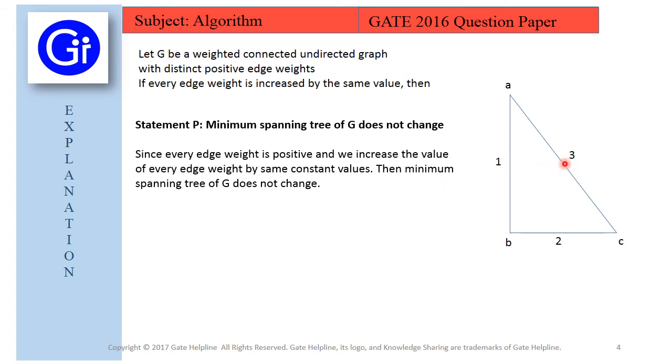Because if we multiply all these edges with the same constant, let's suppose 2, then this will become 2, this will become 4, this will become 6. So the answer will be same, 2 plus 4 will give us the minimum weight to traverse all these edges, A-B-C.